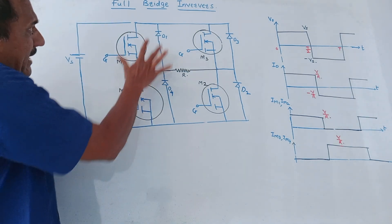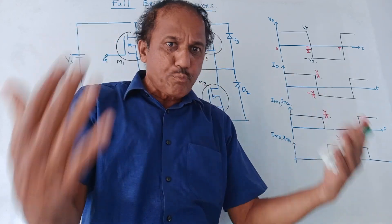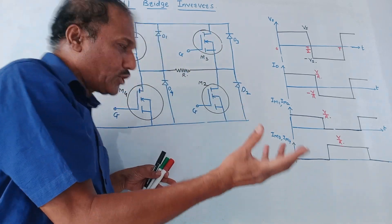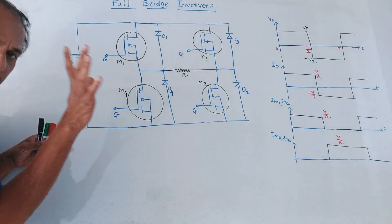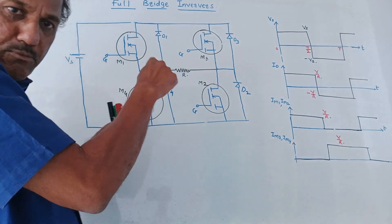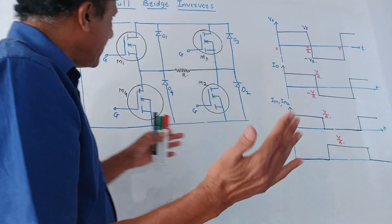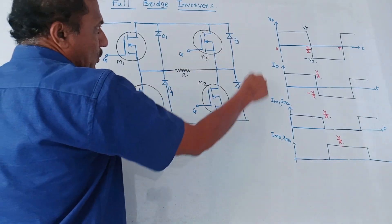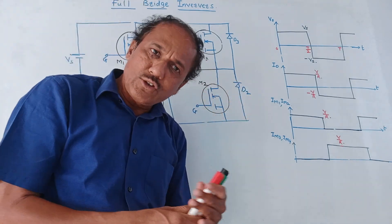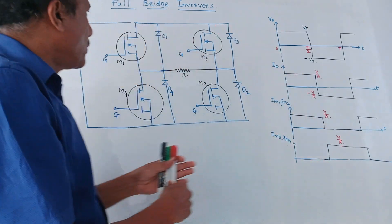This is the circuit diagram for full bridge inverter. Since it is a full bridge inverter, we need to make use of four MOSFETs. Earlier we studied the half bridge inverter where we used two MOSFETs. This is a full bridge inverter, so we are using four MOSFETs: M1, M2, M3, and M4. In parallel with each MOSFET, we connect four diodes D1, D2, D3, and D4. This is the R load — resistive load — and across this resistive load we measure the output voltage.